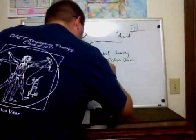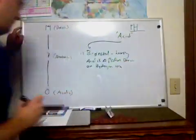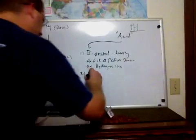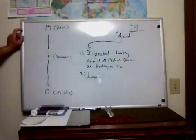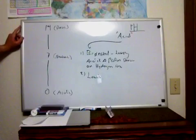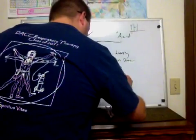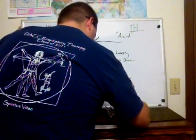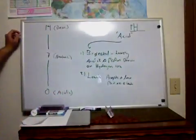Two is something called the Lewis definition. And the Lewis definition is a bit more general and it is perhaps a bit harder to understand. And that is anything that accepts a lone pair of electrons is a Lewis acid.